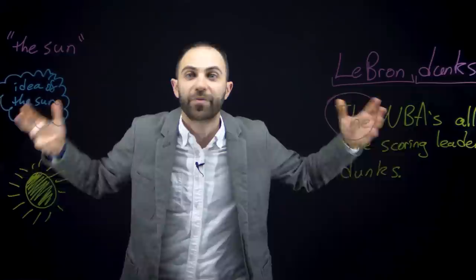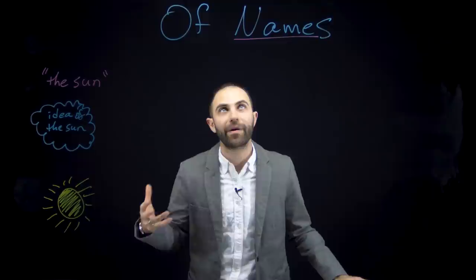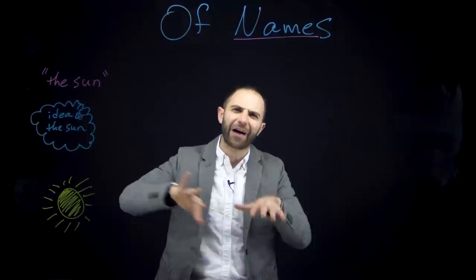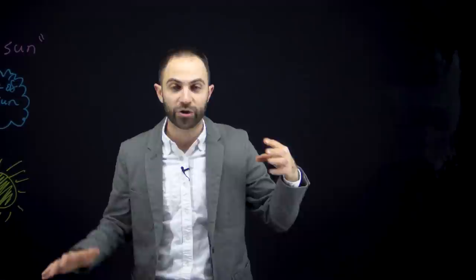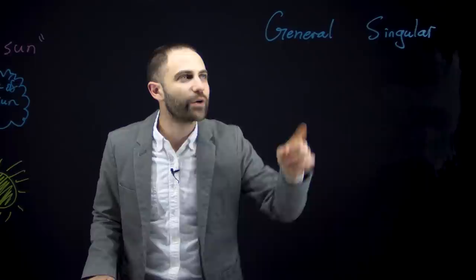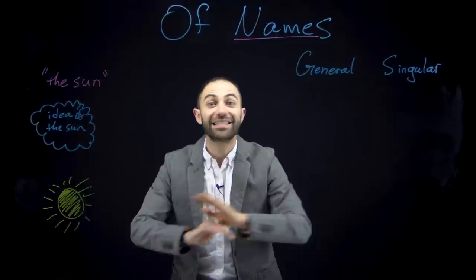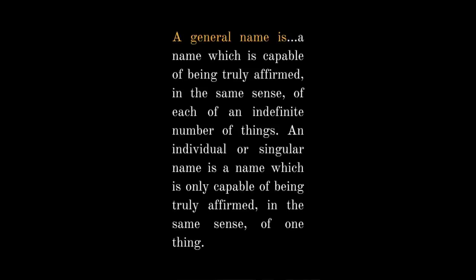Part of what's so influential and powerful about this essay from Mill is that in it he makes three distinctions, dividing up all the different types of names. Two of those distinctions became very influential. The first distinction is between general and singular names — and this has nothing to do with singular versus plural. A general name is one which is capable of being truly affirmed, in the same sense, of each of an indefinite number of things. An individual or singular name is one which is only capable of being truly affirmed, in the same sense, of one thing.